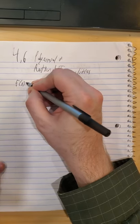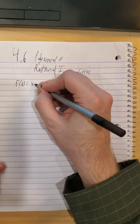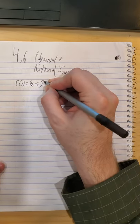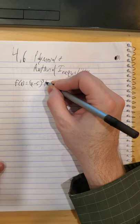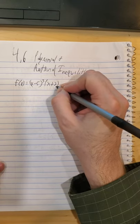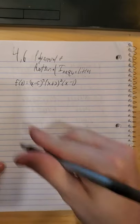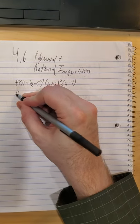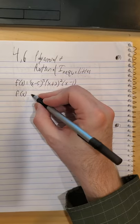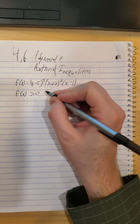So let's take a look at f of x equals x minus 5 quantity cubed by x plus 2 quantity squared by x minus 1. And we're going to find places where f of x is greater than 0.